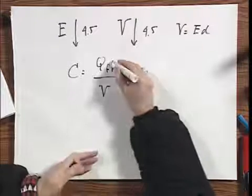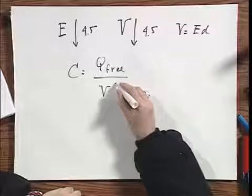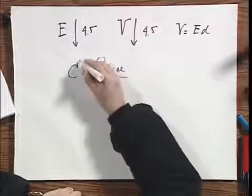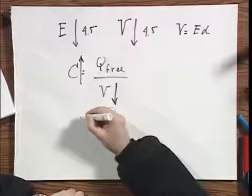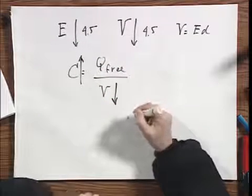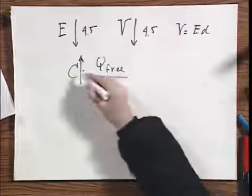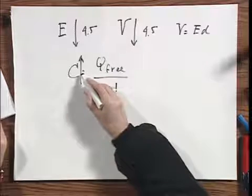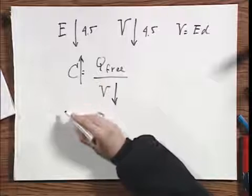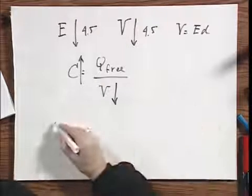Q free is not changing. The potential difference goes down, and so the capacitance goes up by a factor K. So with the dielectric, the capacitance has a four and a half times larger capacitance.